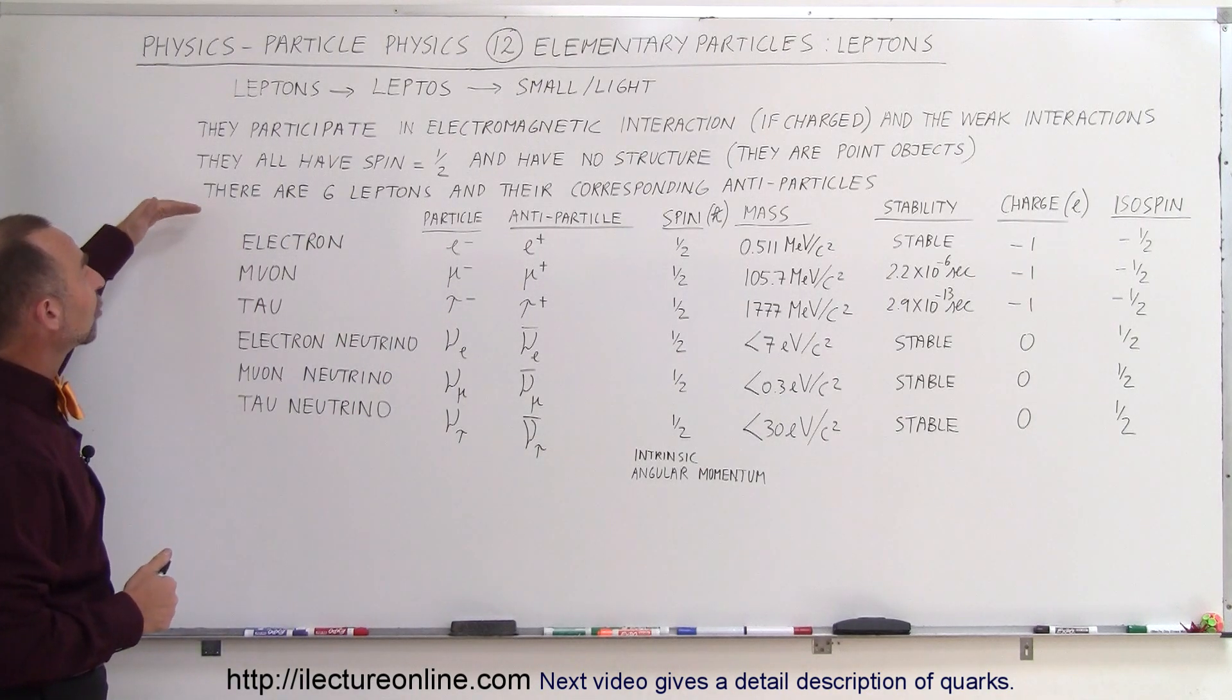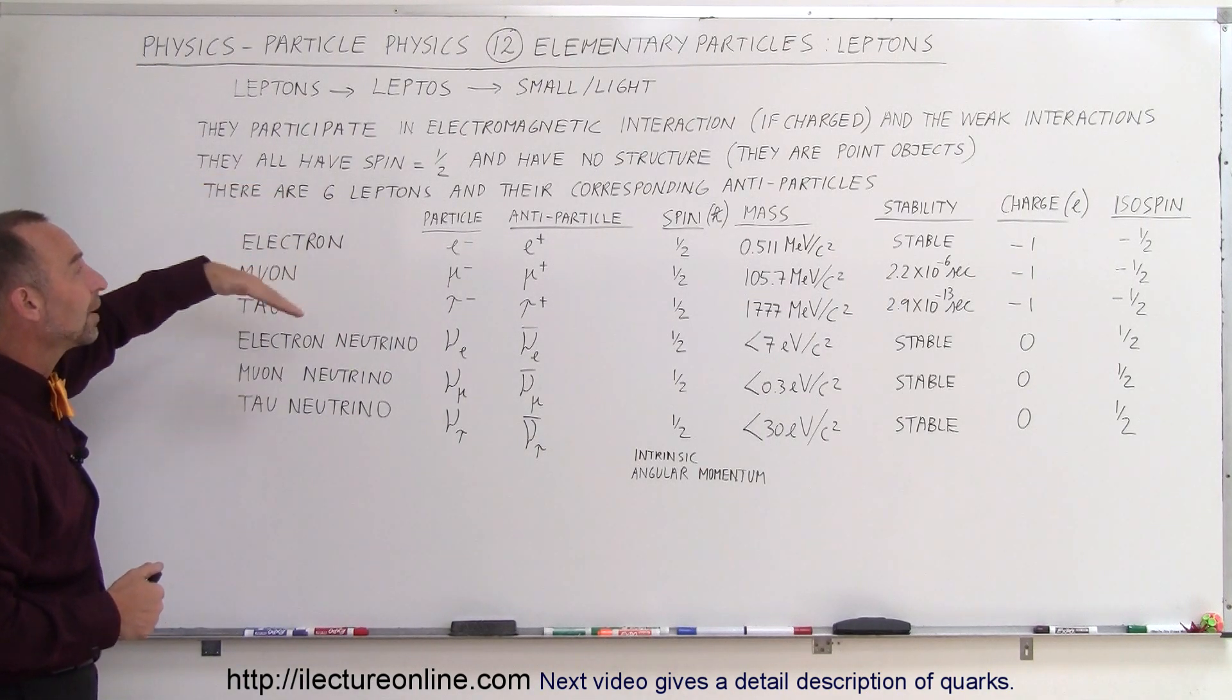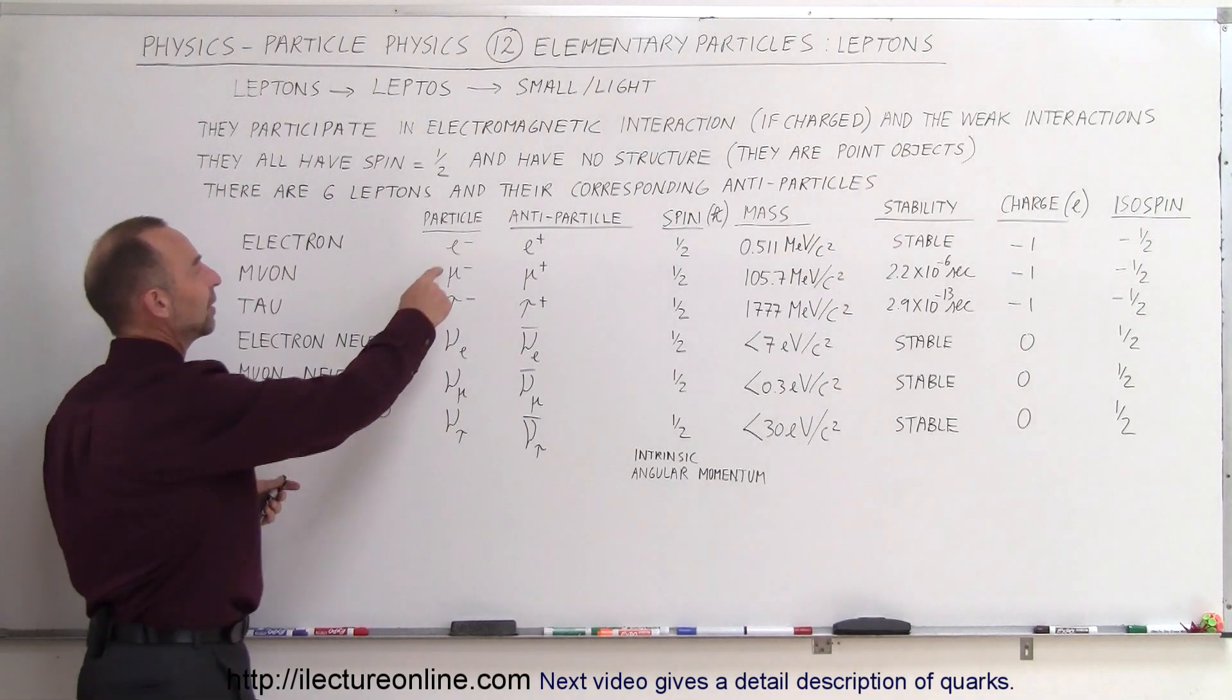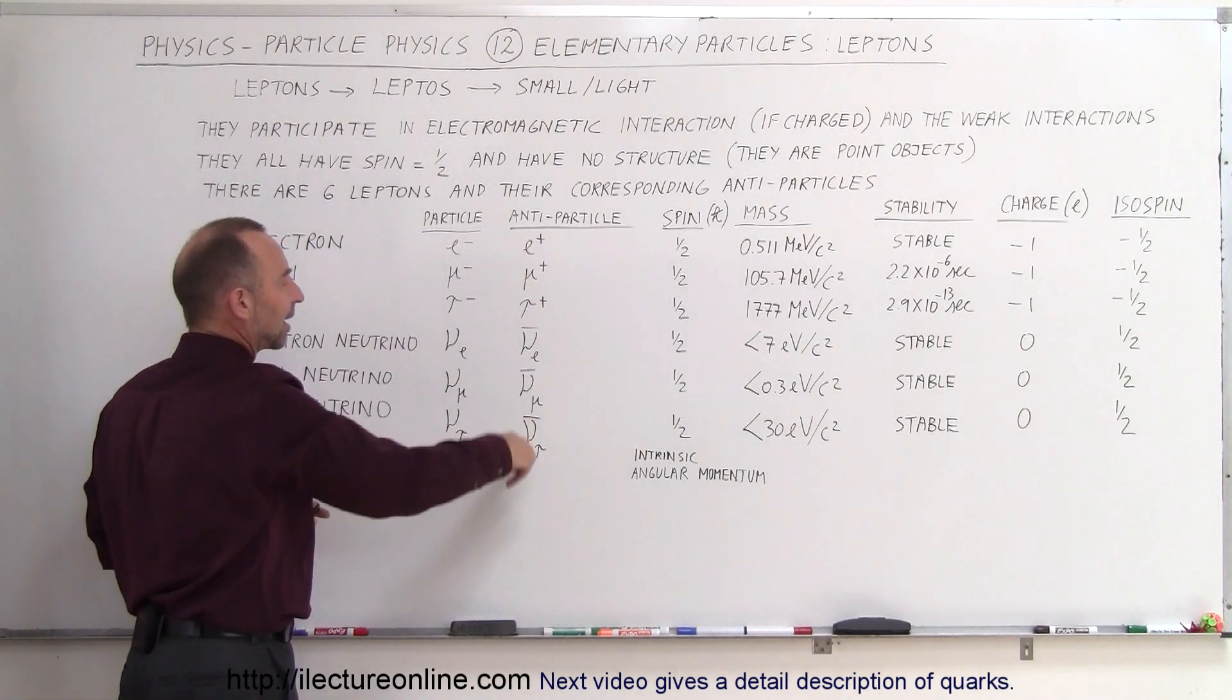What else do we have? So there are the six leptons, and they have the corresponding six anti-particles. So for every lepton, there's an anti-lepton.